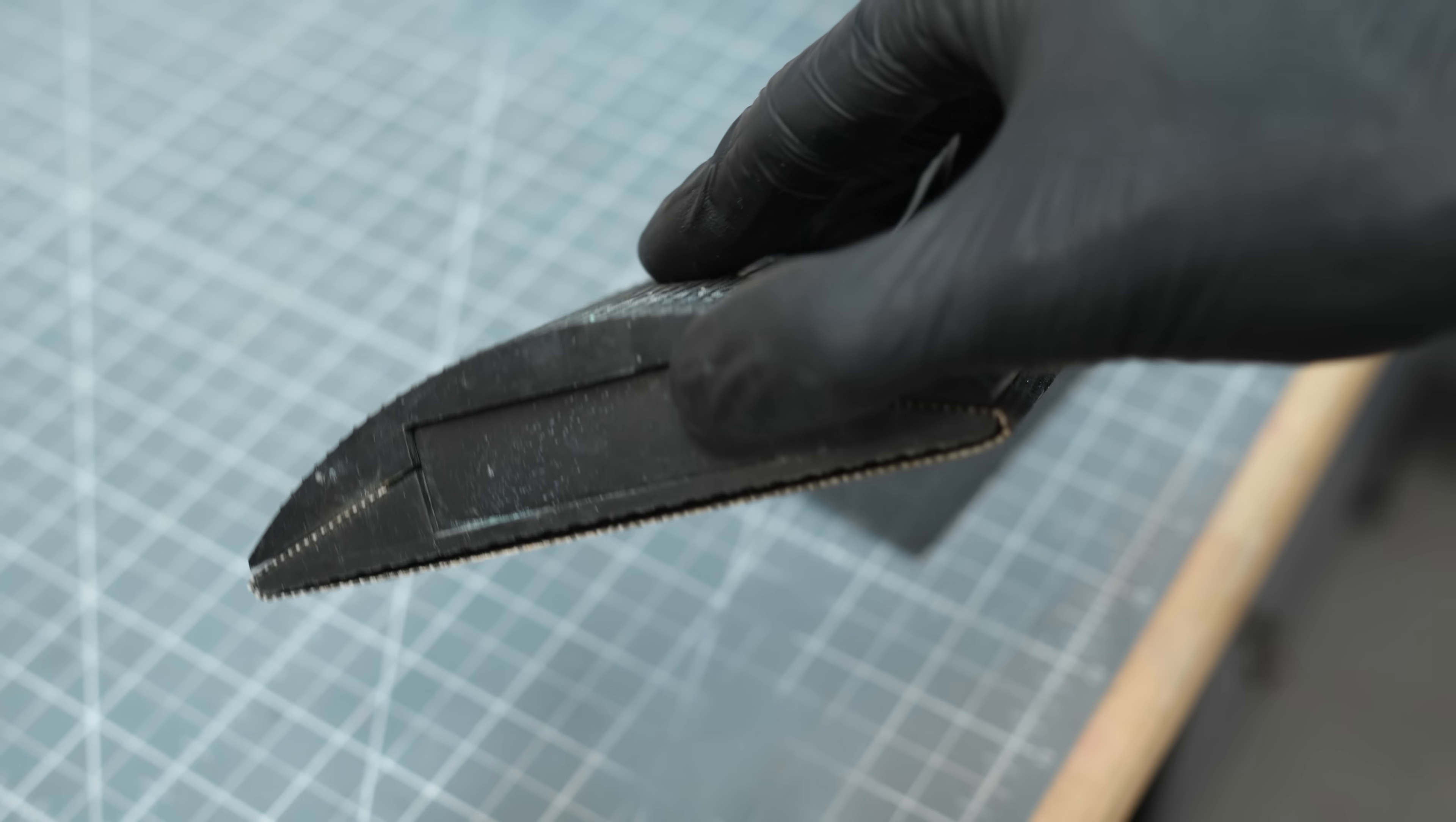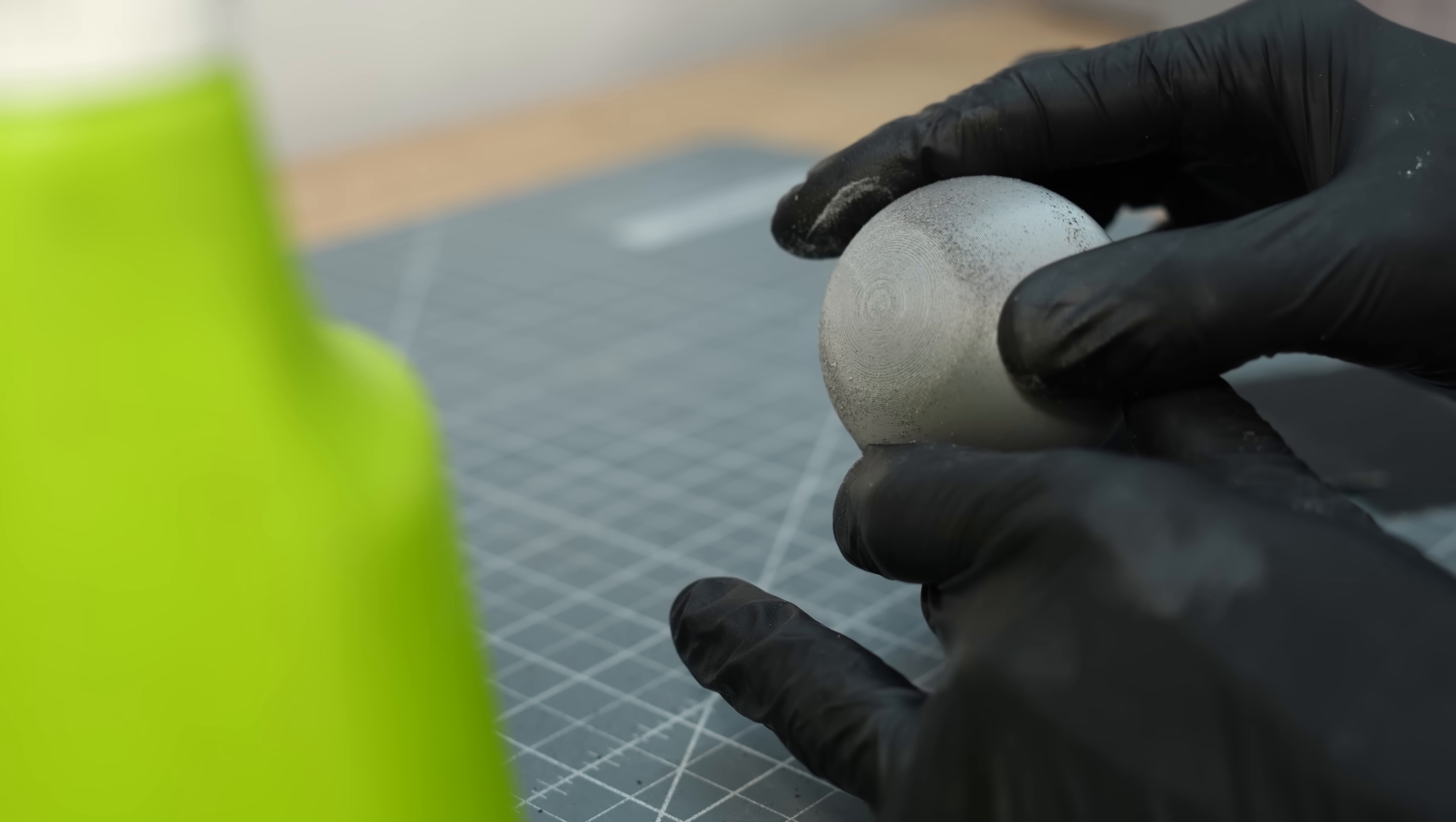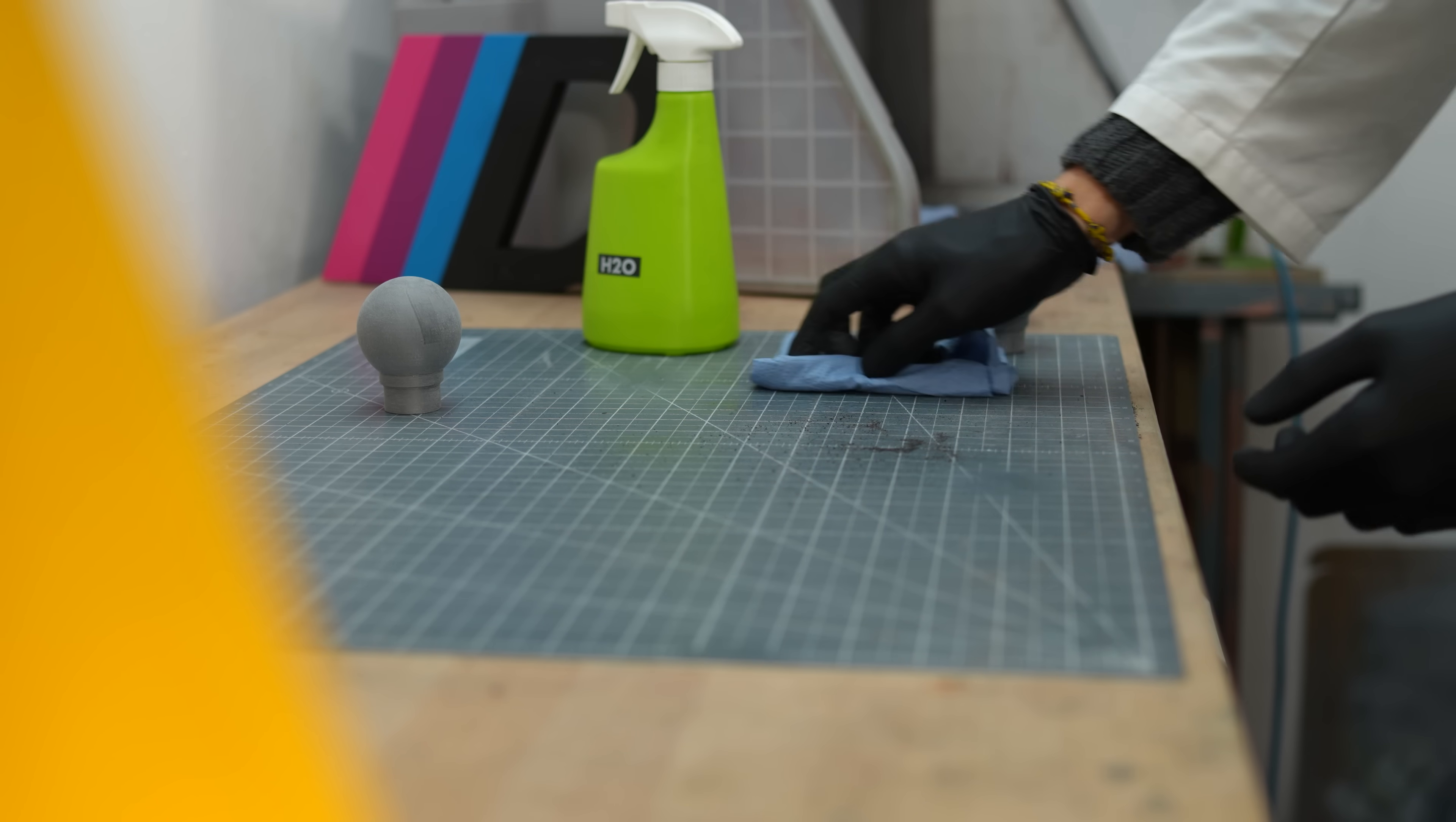You can cut them and mount them on a sanding block or simply use them by hand. By feeling the surface you can identify irregularities and target them specifically. I always make sure to avoid contamination from microplastics and other waste. I bind the removed material in water and dispose it properly.